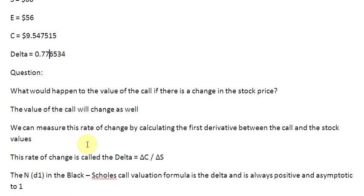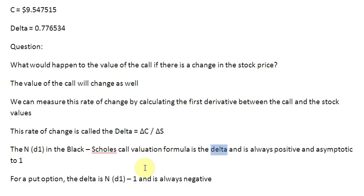If you remember your Black-Scholes call valuation model, you will recall that there is a quantity N of d1 used in that formula, and that N of d1 is simply the delta of the call option. For a call option, the delta or N of d1 is always positive and asymptotic to 1 — it approaches 1 but never reaches there. For a put option, we have the opposite picture: the delta is equal to N of d1 minus 1 and is always negative.